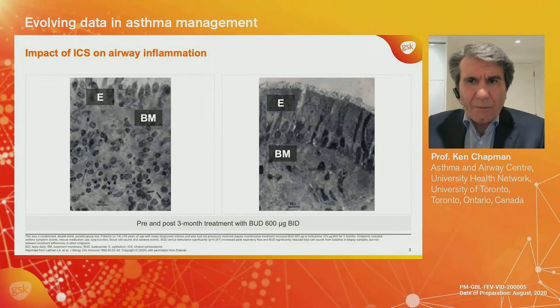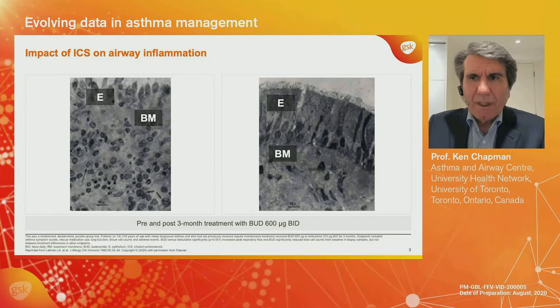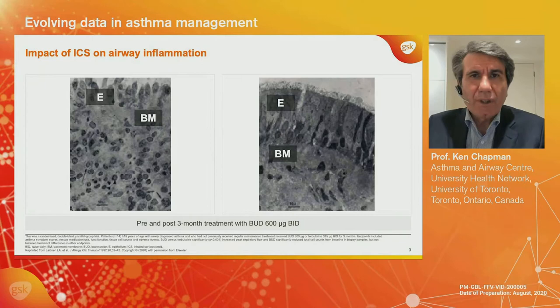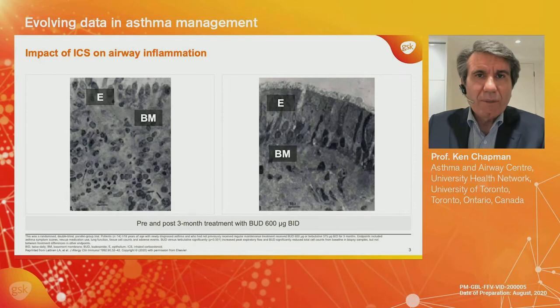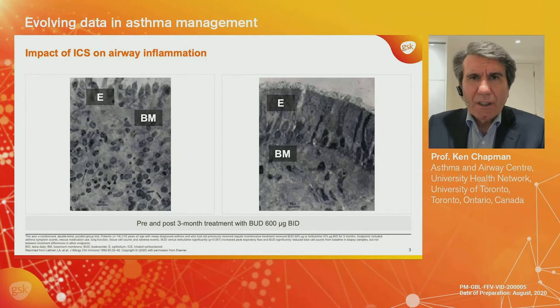This, to me, is one of the fundamentals of our asthma management. At least three decades ago, we recognized that patients with asthma had airways that resembled those on the left. This is an airway biopsy of a patient with asthma — it's difficult to recognize as an airway biopsy. Up at the top, where we're meant to be seeing pseudo-columnar ciliated epithelium, it's hard to recognize epithelium. And below the basement membrane, there's a sea of inflammatory cells which, in the appropriate stain, we would recognize as eosinophils.